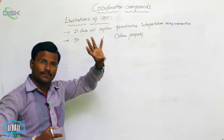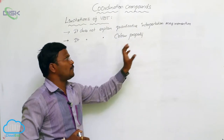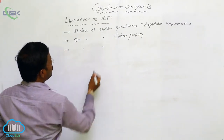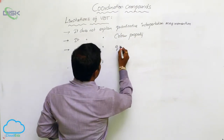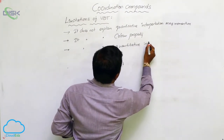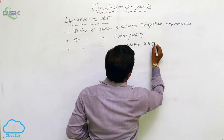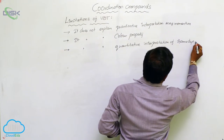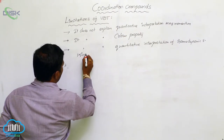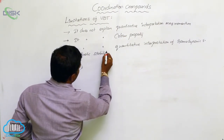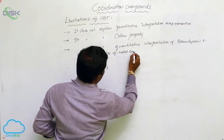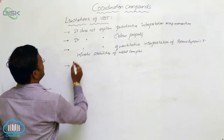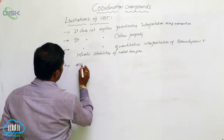VBT fails to provide quantitative interpretation of magnetic data and also fails to explain the color properties of coordination complexes, since many coordination complexes exhibit color. Additionally, it does not explain the quantitative interpretation of thermodynamic and kinetic stabilities of metal complexes.